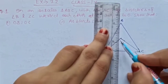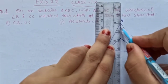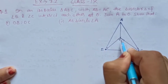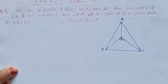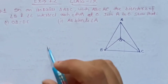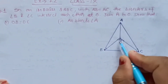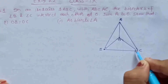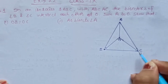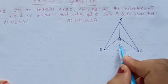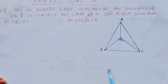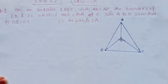Ab yeh point O hoga, aur isko yahan se join kar dete hain. Yeh hoga hamara point O. To kya show karna hai iske andar? OB equal to OC. OB aur OC yeh dono sides hume equal prove karni hain, means triangle OBC ko hume congruent karna hai.